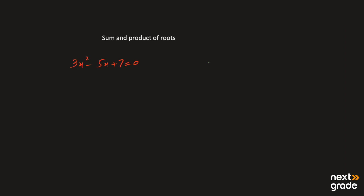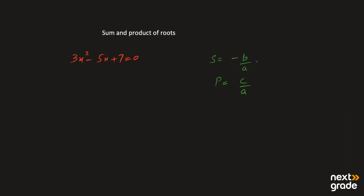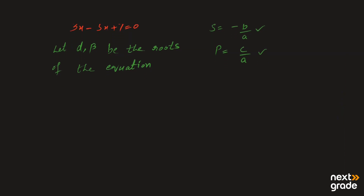We already know that to find the sum of roots, we will first let the roots of the equation. Since it is a quadratic equation, it will have two roots. So we let: alpha and beta are the roots of the given quadratic equation. یعنی یہ جو ہمیں equation دی گئی ہے، ہم کہہ رہے ہیں کہ ہم let کرتے ہیں alpha اور beta اس کے roots ہوں گے۔